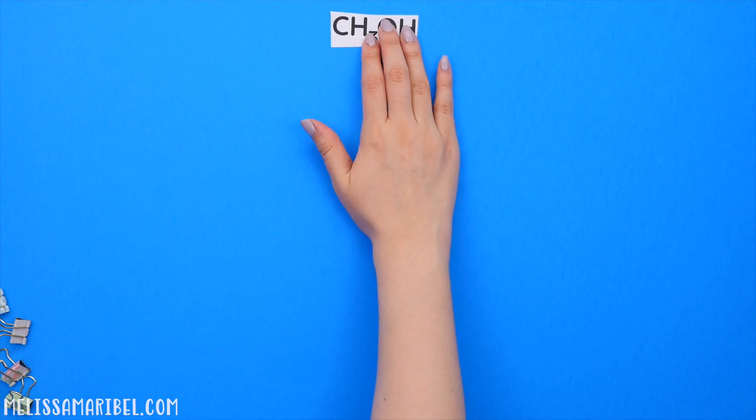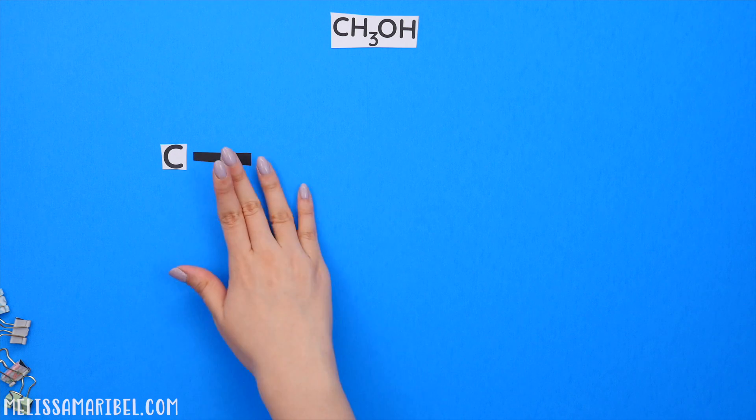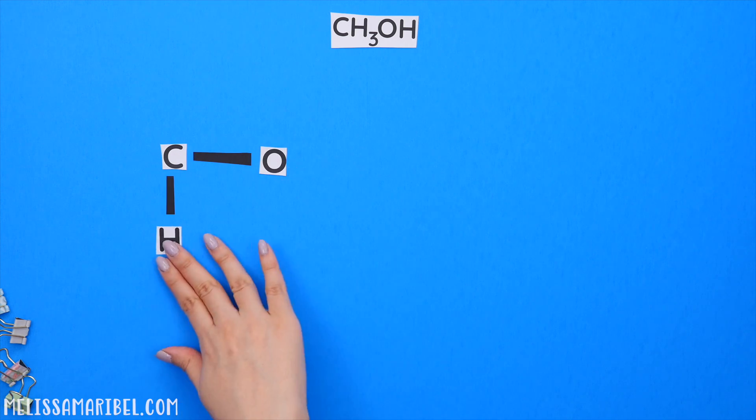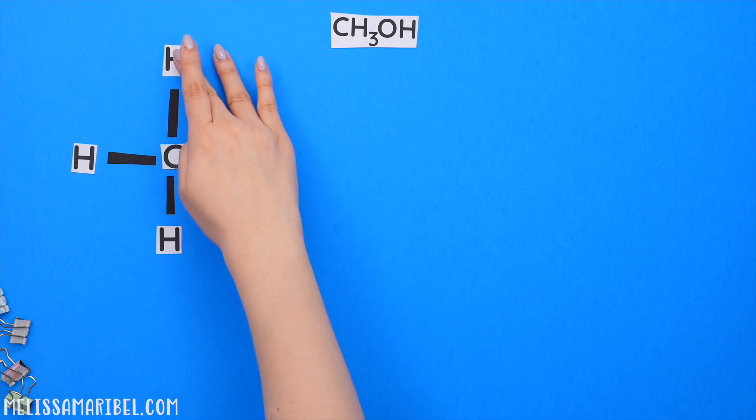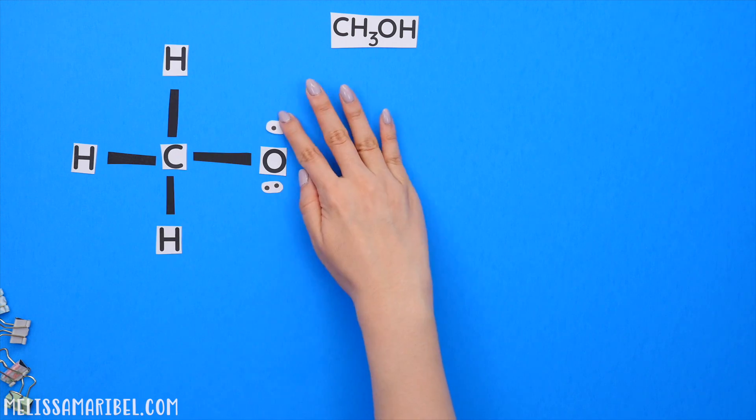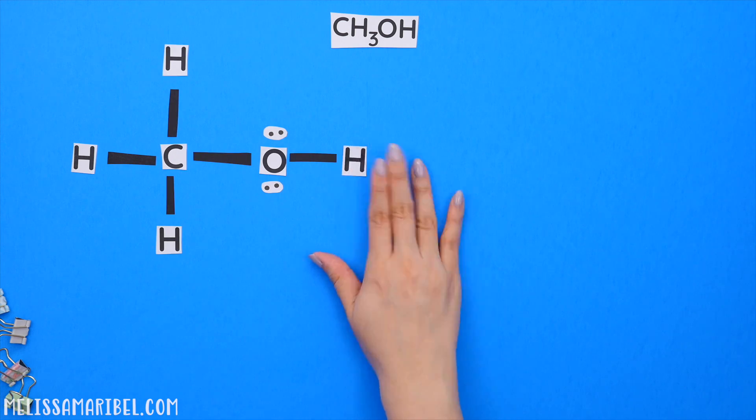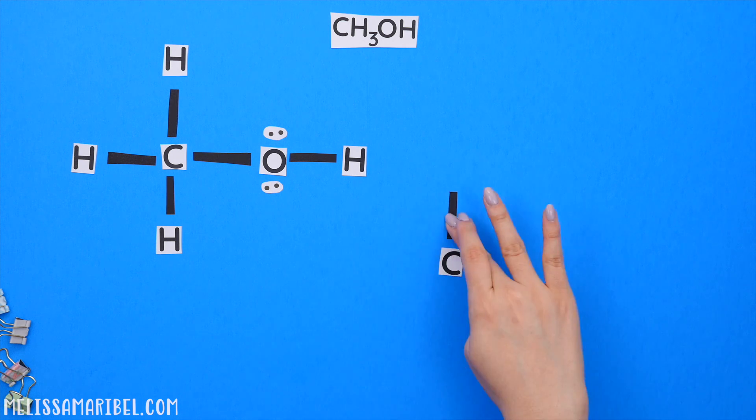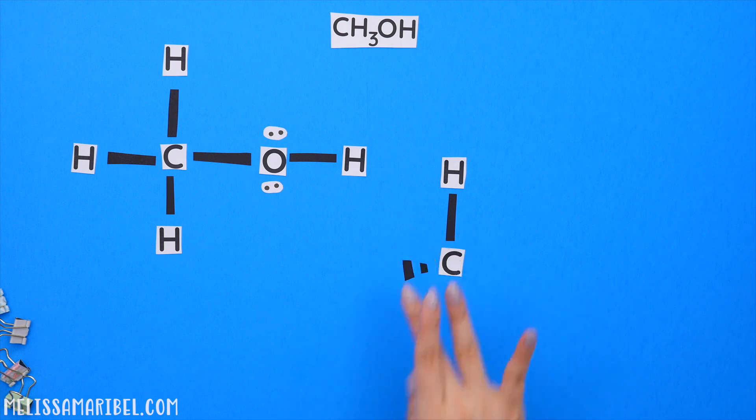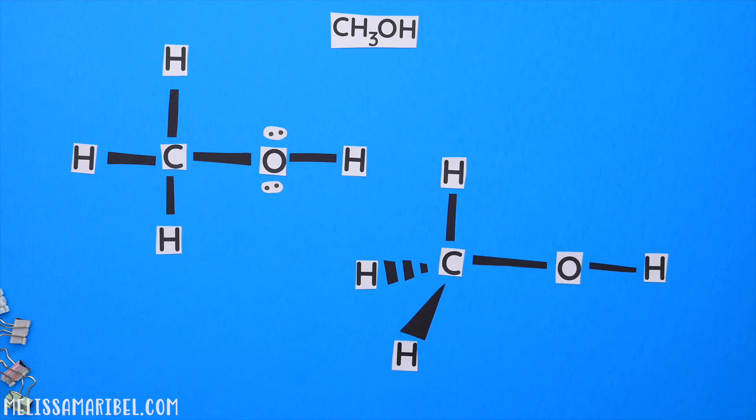Now for CH3OH, here's the Lewis structure we found in part one. And our geometry for carbon is still tetrahedral. And for oxygen, the molecular geometry is bent. Drawing this in VSEPR form, the carbon still has one solid line between hydrogen, one dashed and one wedged, while oxygen has one solid line between hydrogen, and one dashed and one wedged line for each lone pair.